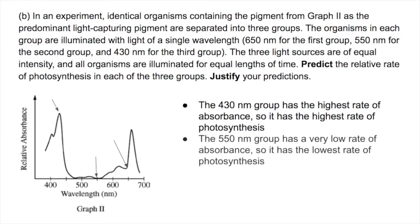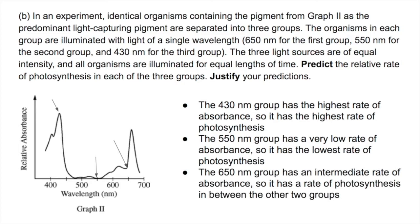Looking at the 550 nm group, this arrow in the middle, it has a very low rate of absorbance, so it has the lowest rate of photosynthesis. And finally, the 650 nm group has an intermediate range of absorbance in between that of the other two groups, so it has a rate of photosynthesis in between the other two groups.